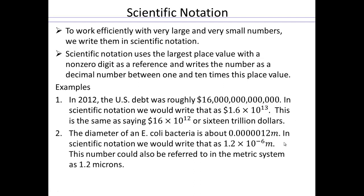The diameter of an E. coli bacteria is about 0.0000012 meters. In scientific notation, we would write that as 1.2 times 10 to the negative 6 meters. Or in the metric system, we can also call that 1.2 microns. That's one thing nice about the metric system. You can go up and down between units by just multiplying or dividing by powers of 10.